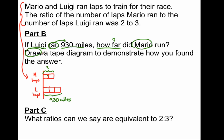It says draw a tape diagram to demonstrate how you found the answer. If I look at the tape diagram, I'm noticing that I'm given information about Luigi. So, I'm given 1, 2, 3 units of I don't know what length are equal to 930 miles. So, I can either say 3 times what number gives me 930, or I can say 930 divided by 1, 2, 3, divided by 3. And then when I do that, I can find out what the actual size of 1 unit is.